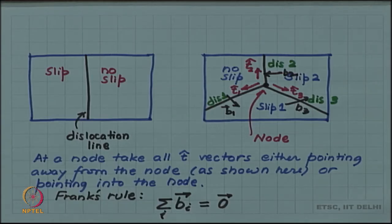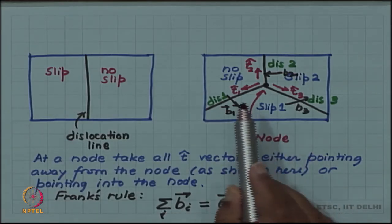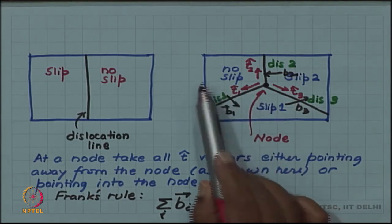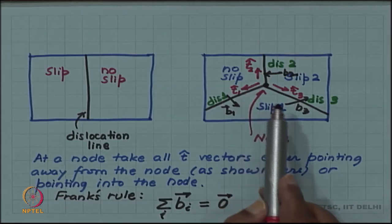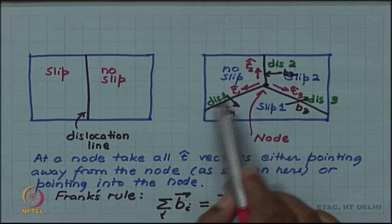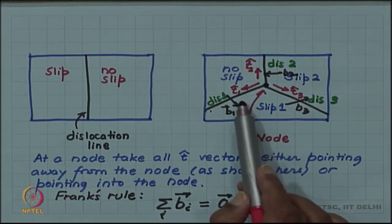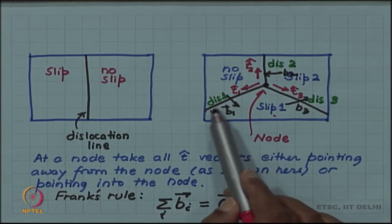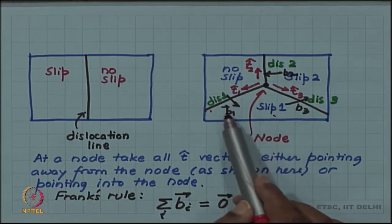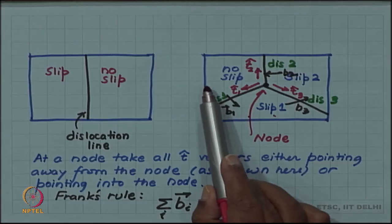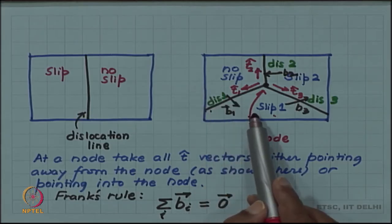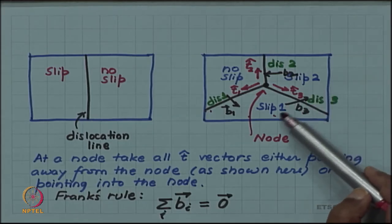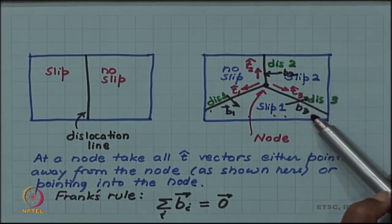This is easy to intuitively see although we are not giving exact proof, but you can intuitively see. Suppose we start from the no slip region then as I cross this dislocation line 1 then I undergo a slip 1 and the slip is by amount given by the Burgess vector B1. So this region is slipped by a slip by a vector B1 with respect to the no slip region. As I cross this dislocation line 3 now I get a further slip of Burgess vector B3.